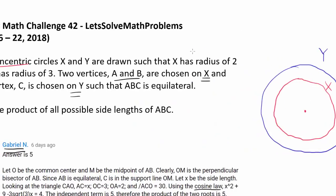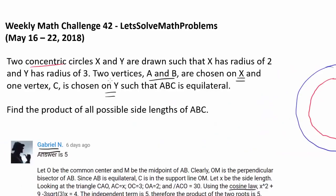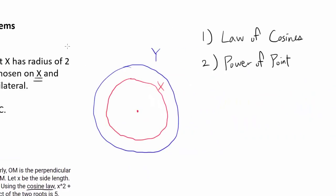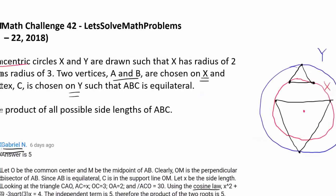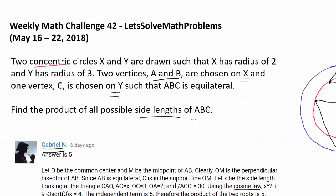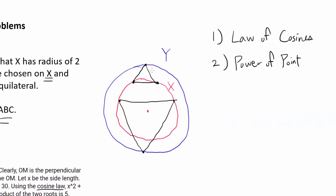We have two vertices A and B on X and the third vertex on Y. Drawing all possible equilateral triangles, it's clear there are only two — a larger one and a smaller one. We want to find S₁ times S₂, the product of the side lengths of both triangles.